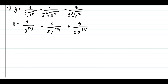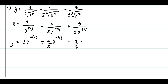Next, let us rewrite the variable x in the numerator. Since we have positive exponents in the denominator, we are going to have negative exponents. So this becomes 3 times x raised to negative 5/3, plus 4/5 times x raised to negative 7/4, plus 3/2 times x raised to negative 2/5. Now let us find the derivative.